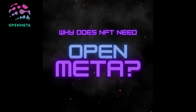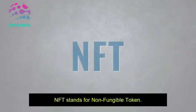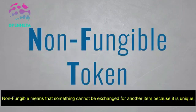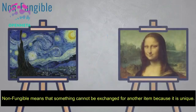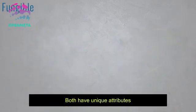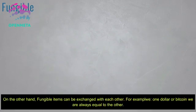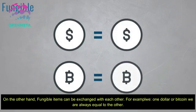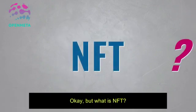Why does NFT need Open Meta? NFT stands for non-fungible token. Non-fungible means that something cannot be exchanged for another item because it is unique. For example, one work of art is not equal to another — both have unique attributes. On the other hand, fungible items can be exchanged with each other, for example, one dollar or one bitcoin is always equal to the other. But what is NFT?